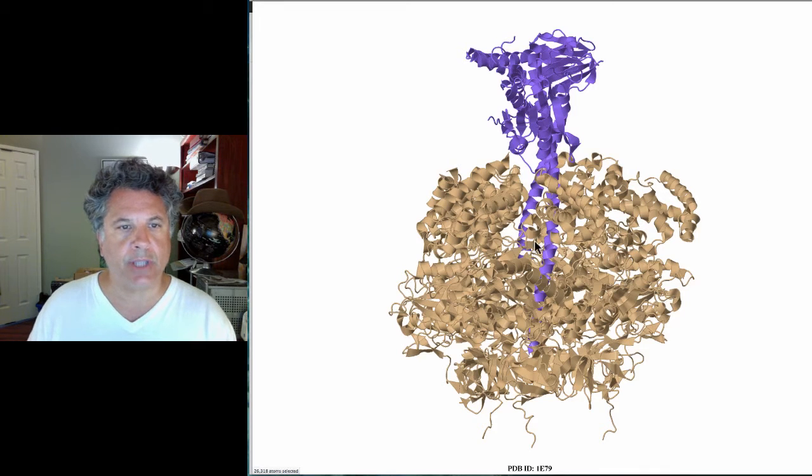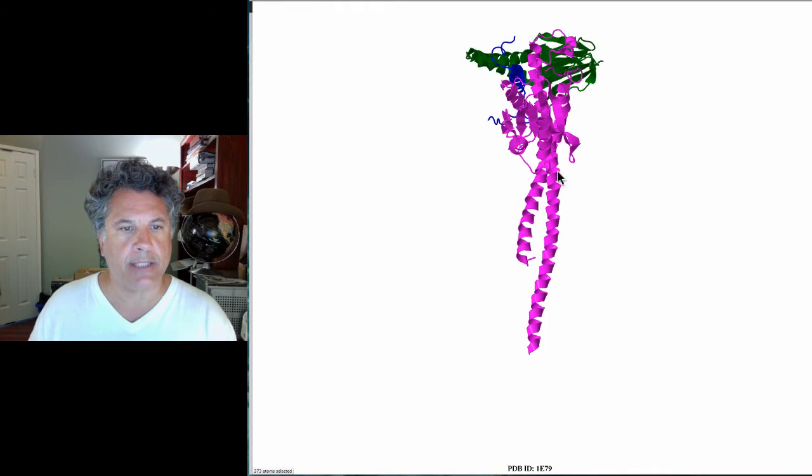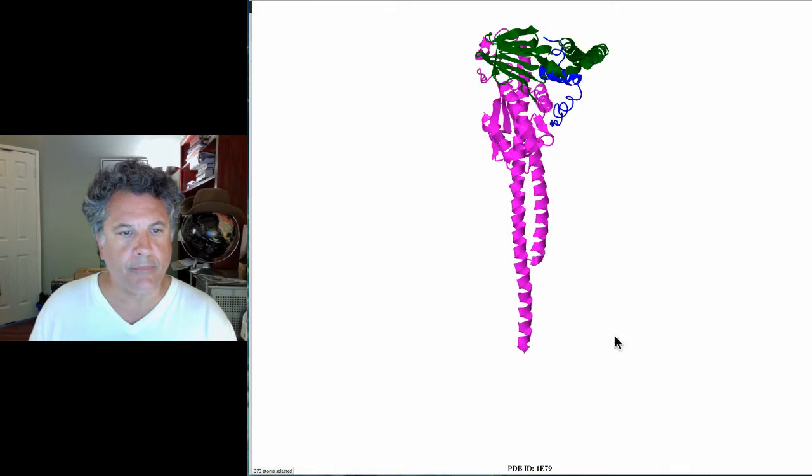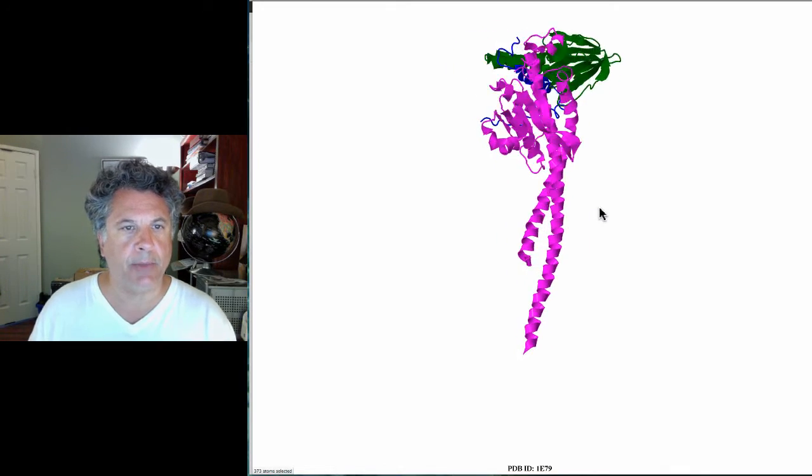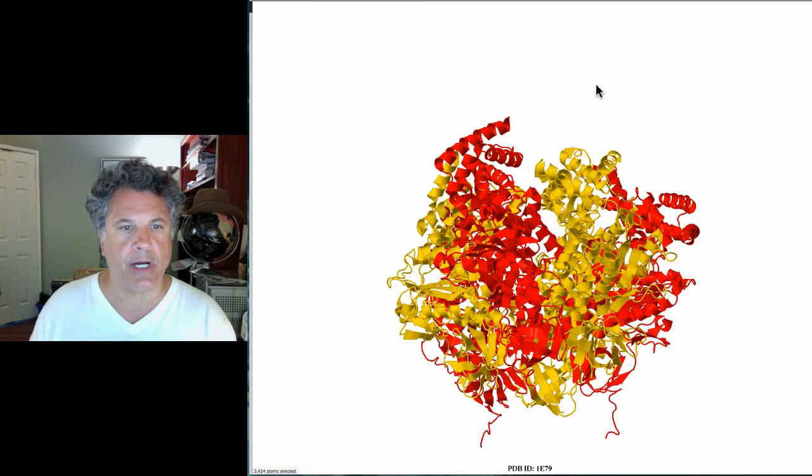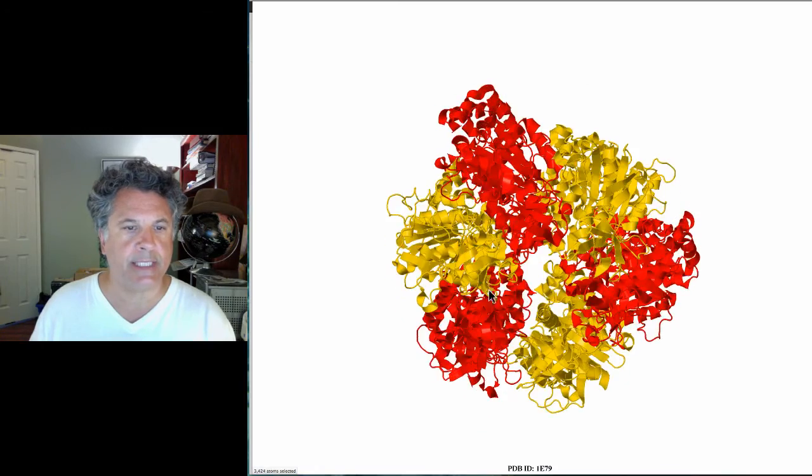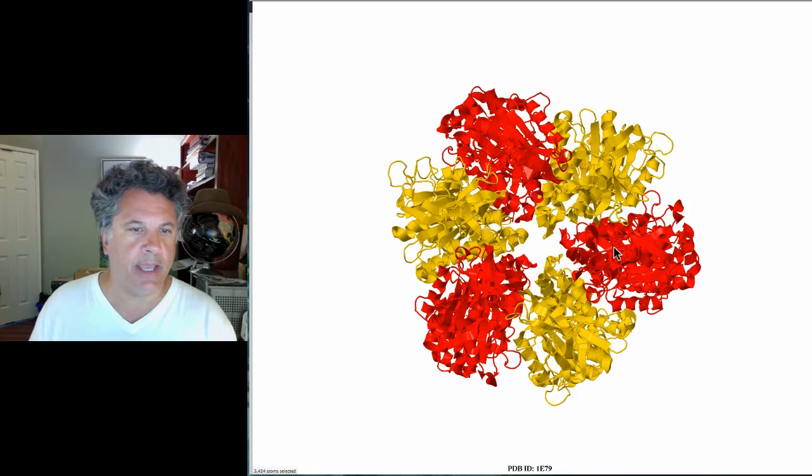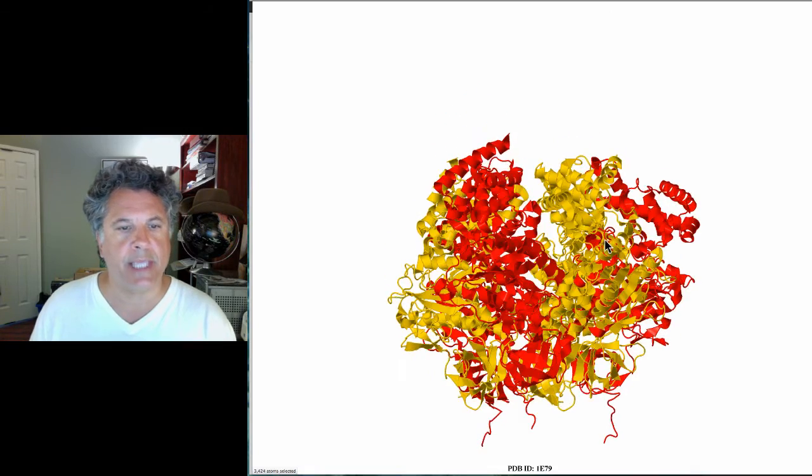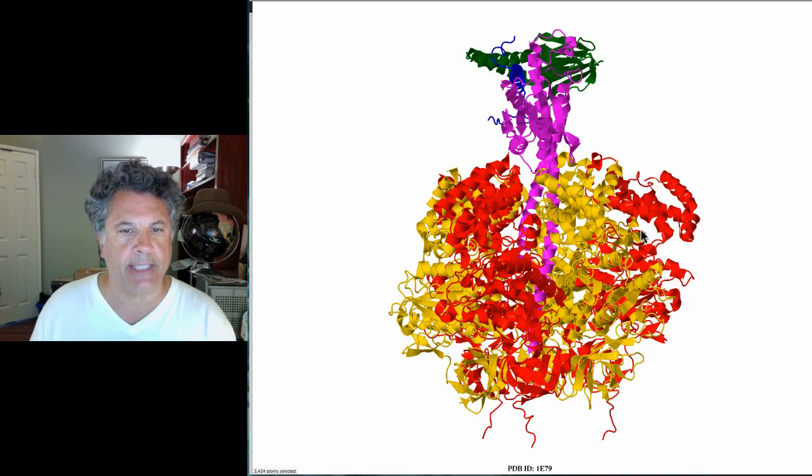The central stalk of the axle projects deeply into the catalytic subunit. There are three subunits in the axle and stalk, and six subunits of the F1 catalytic domain. Only three of these, the yellow ones, are actually catalytically active.